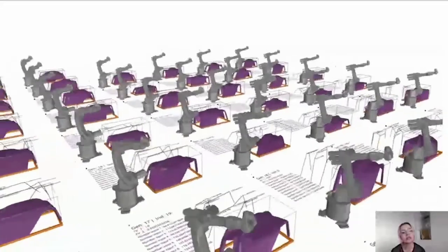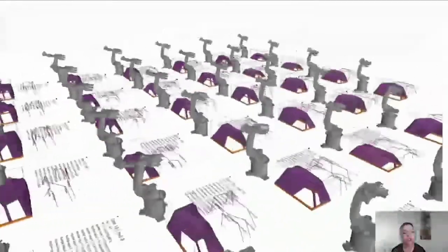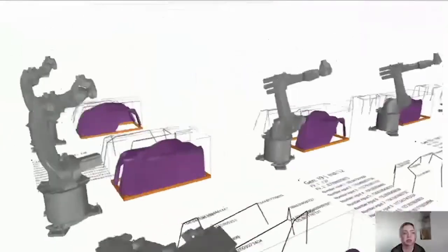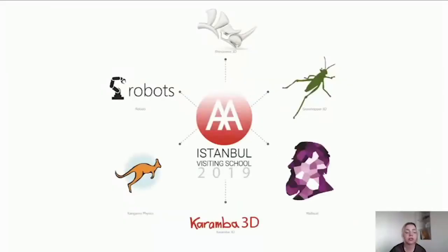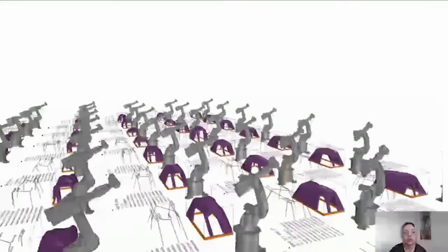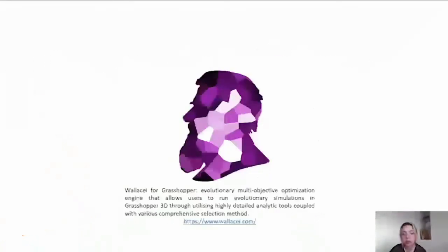As you might be aware, in recent years evolutionary optimization processes have gained recognition in architecture and related design disciplines. And the application of multi-objective optimization is not only limited to academic research, but it has also been extended to professional practices as well. And our PhD researchers in EmTech have developed an evolutionary multi-objective optimization solver engine called Volusys. And this engine allows users to run evolutionary simulations in Grasshopper through utilizing highly detailed analytic tools coupled with various comprehensive selection methods.